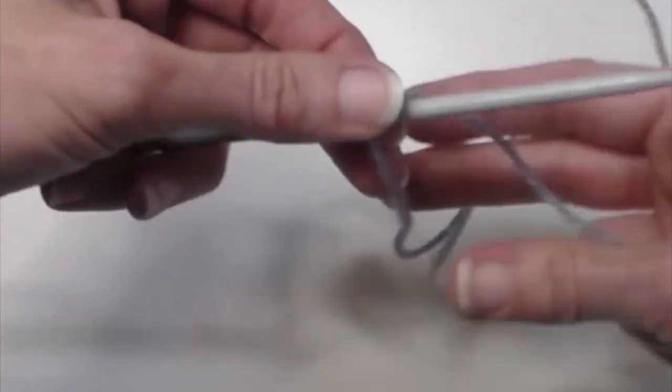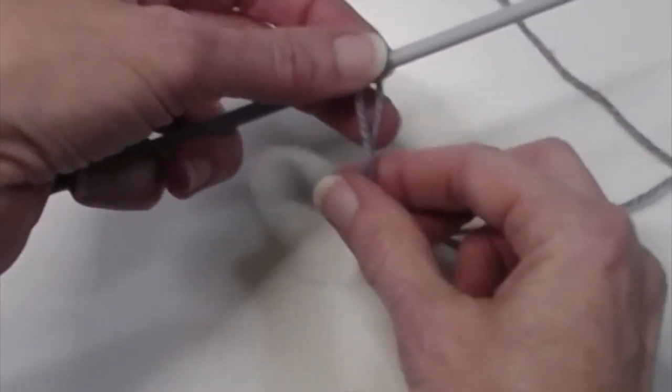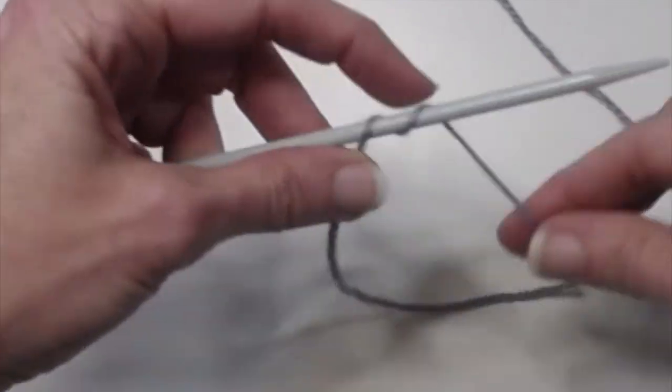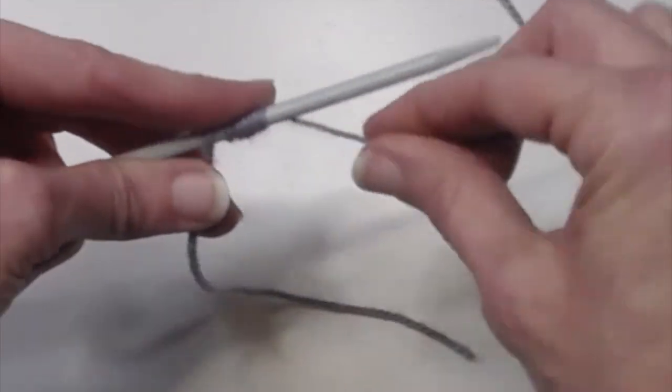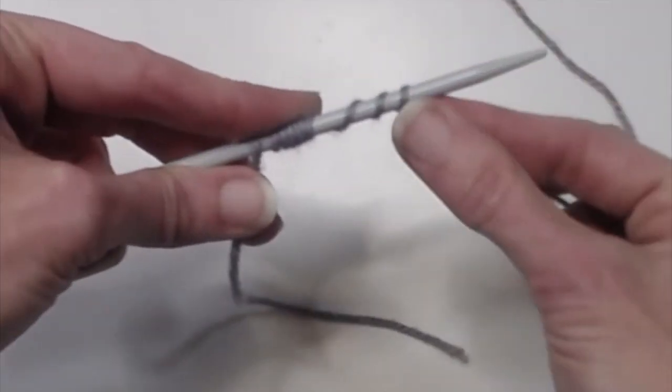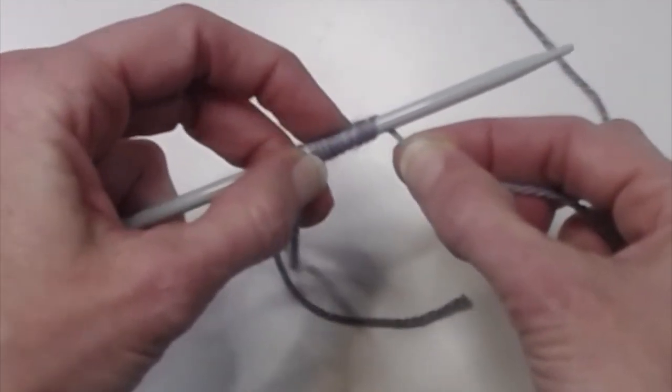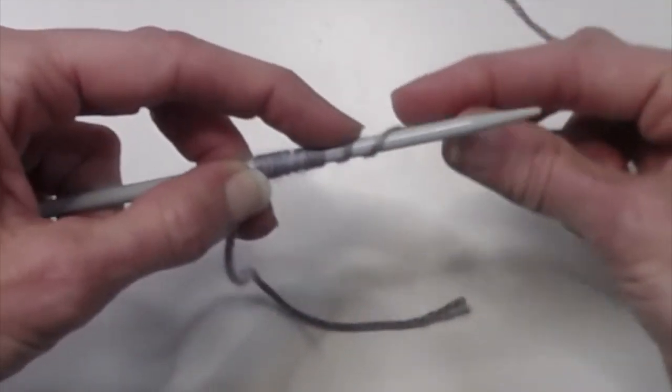The first thing we want to do is measure out our yarn. If you're used to using the wrap method, which is leaving a bit of a tail and wrapping the yarn around one, two, three, four, five, six, seven, eight, nine, ten to estimate ten stitches. Because we're going to be using a spacer needle, you'll find that a wrap of eleven or twelve will be a good measure for ten stitches.